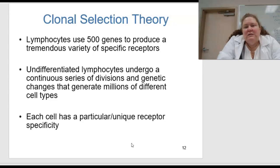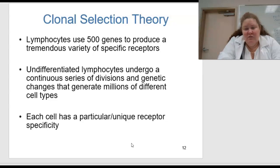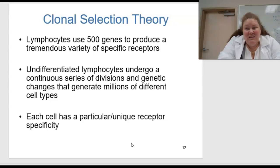Talking about clonal selection theory: lymphocytes use 500 genes to produce a tremendous variety of specific receptors. Undifferentiated lymphocytes undergo a continuous series of divisions and genetic changes that generate millions of different cells, and each cell has a particular or unique receptor specificity.